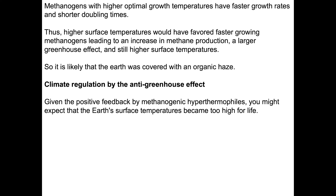Higher surface temperatures would have favored faster-growing methanogens, leading to an increase in methane production, an increase in the greenhouse effect, and an increase in surface temperatures. So it's likely the Earth was covered with an organic haze. We also have climate regulation by the anti-greenhouse effect. Given this positive feedback by methanogenic hyperthermophiles, you might expect Earth's surface temperature became too high for life — too much of a good thing, like Venus. The highest temperatures life forms can survive today is about 113 degrees centigrade.